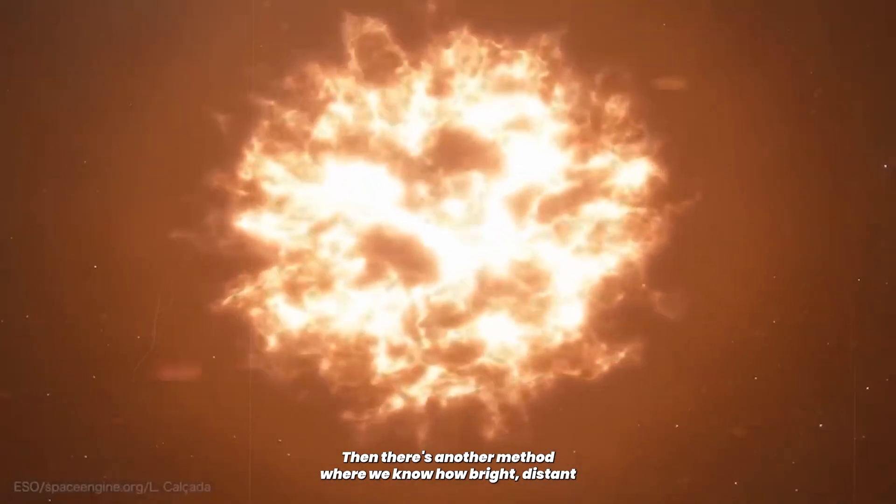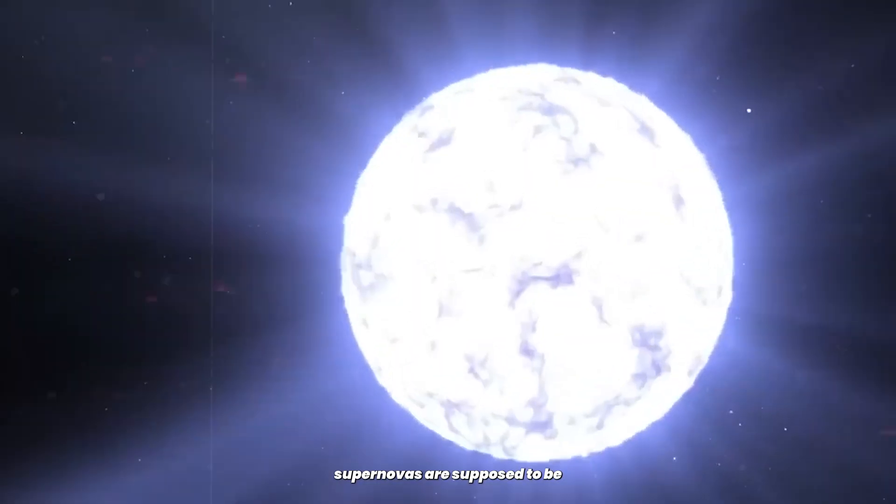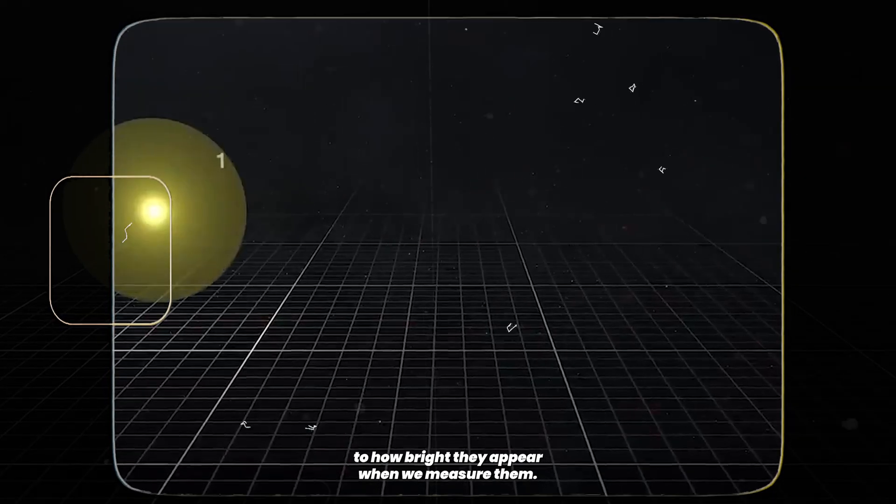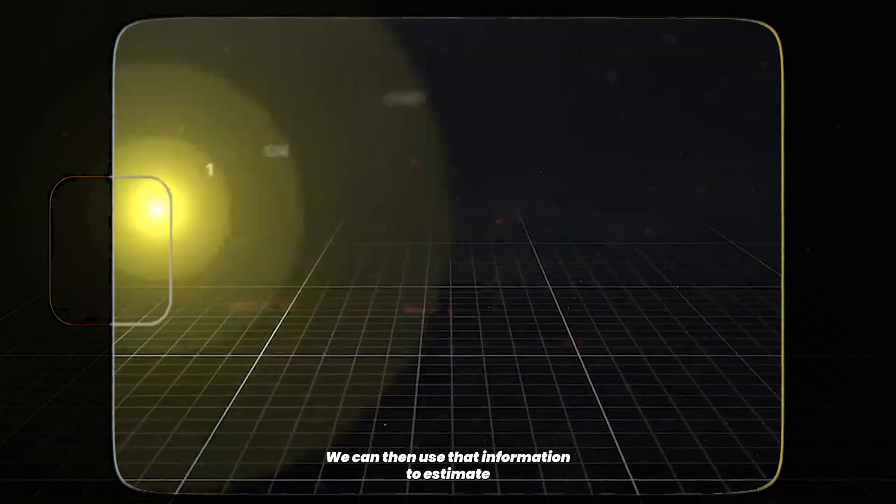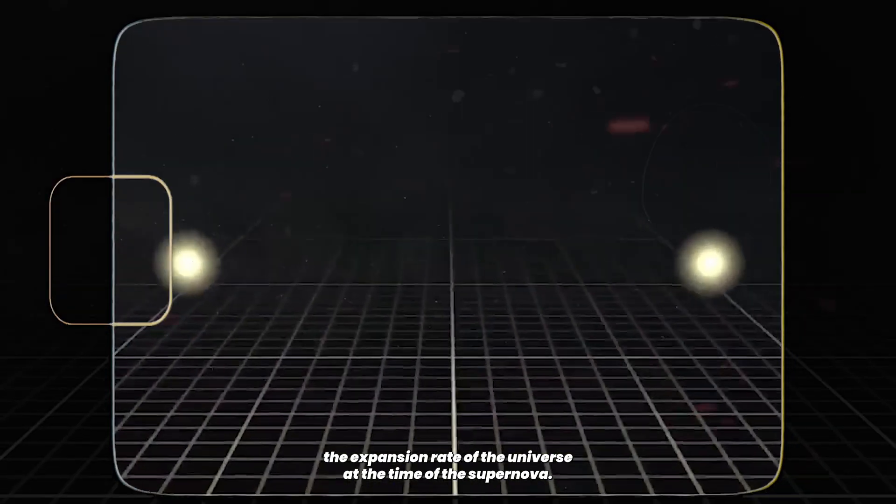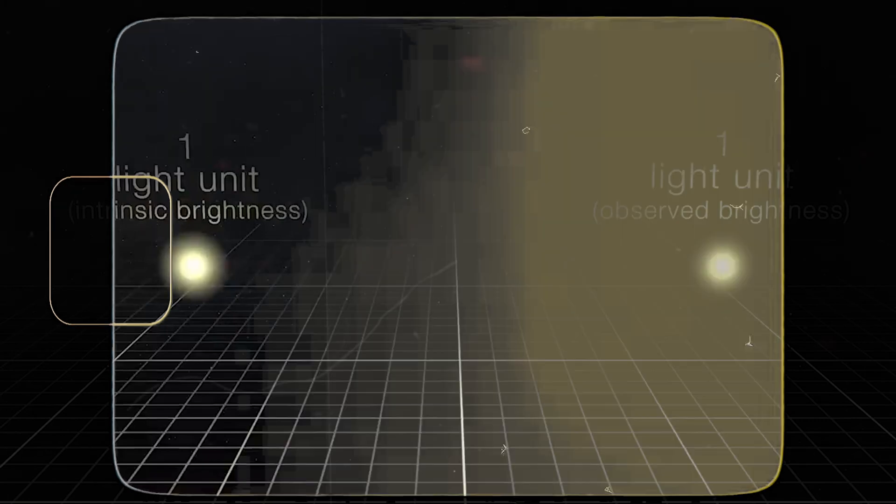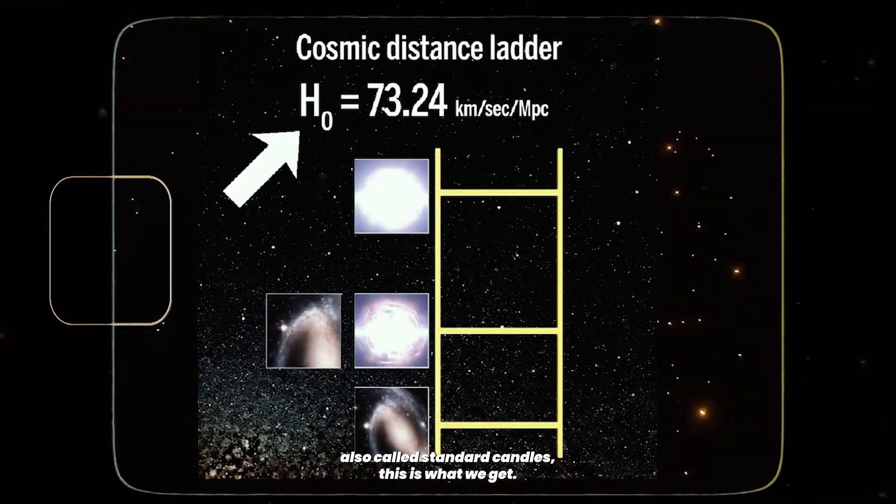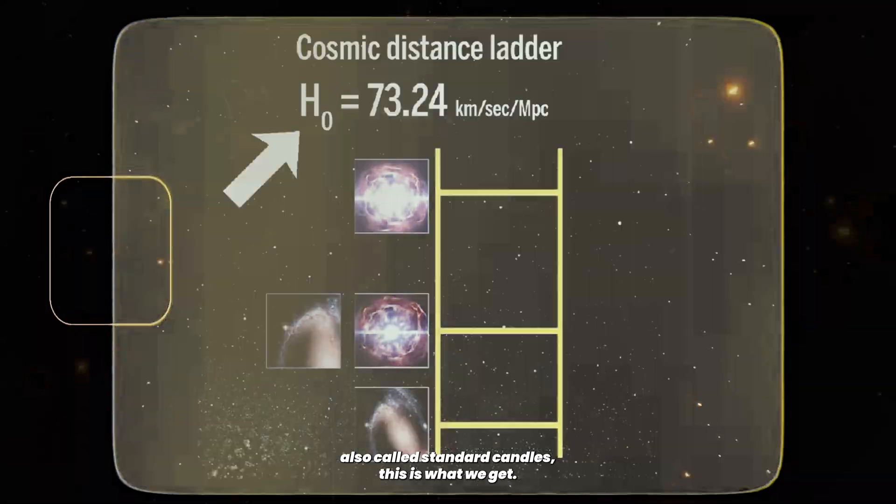Then there's another method where we know how bright distant supernovas are supposed to be, and we can compare that to how bright they appear when we measure them. We can then use that information to estimate the expansion rate of the universe at the time of the supernova. When we calculate the expansion rate using this method, also called standard candles, this is what we get.